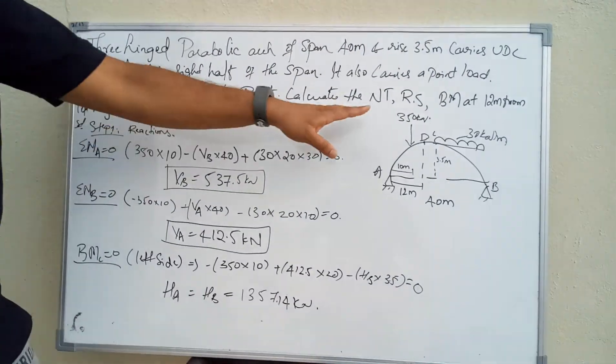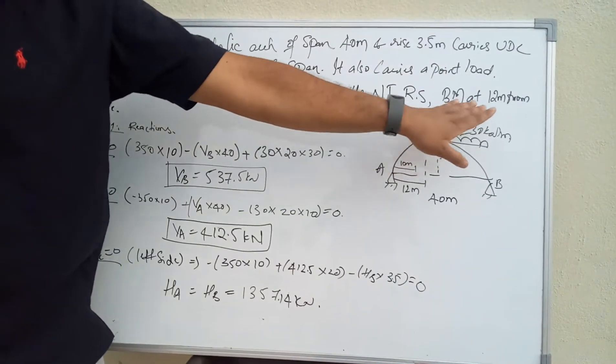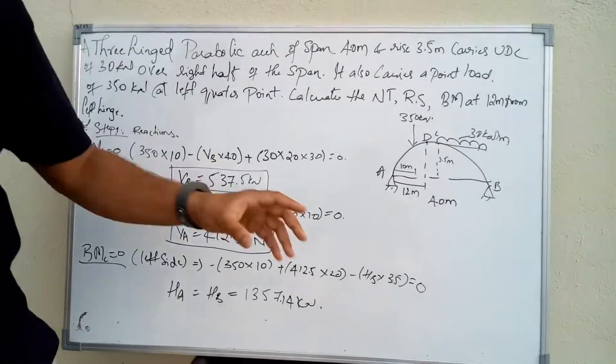We need to calculate the normal thrust, radial shear, and bending moment at 12 meters from the left hinge. Let's begin with the problem.